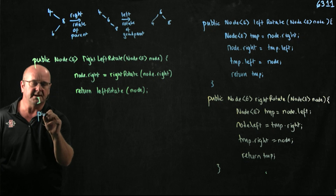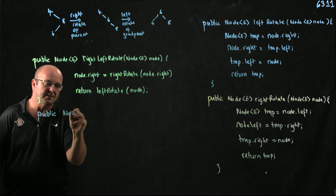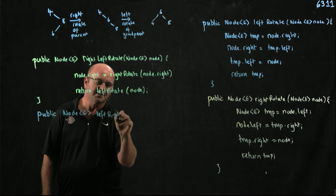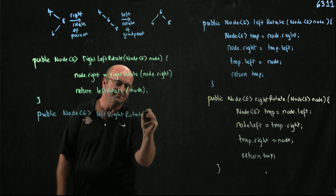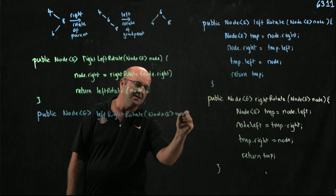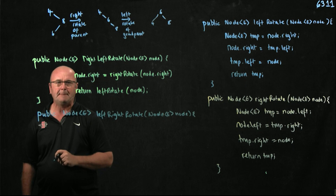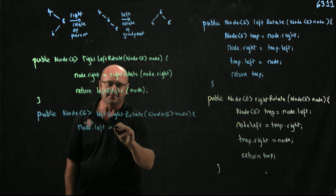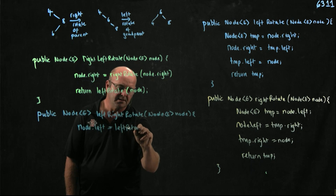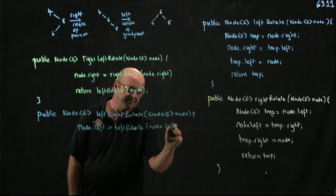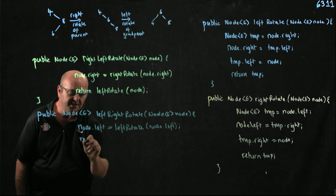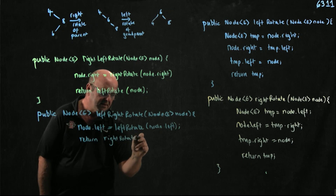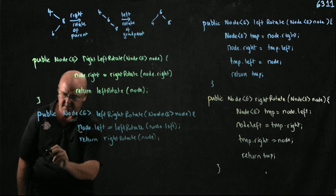Similarly, we can do a left-right rotate that also returns a node and accepts a node as its parameter. We say node.left equals left_rotate(node.left), and then return right_rotate(node).